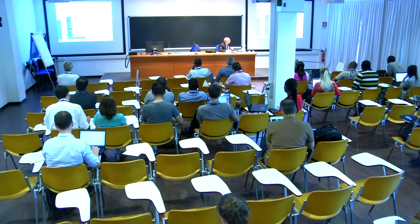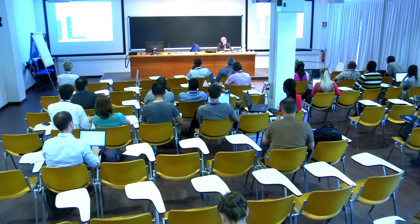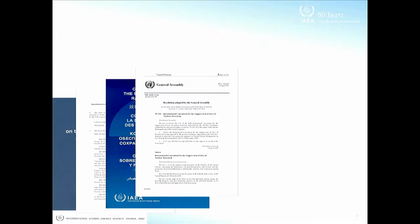An important factor that distinguishes nuclear security from nuclear safety, from the legal point of view, is that apart from instruments adopted under the auspices of the IAEA, there are a number of other instruments — treaties in particular, but also UN Security Council resolutions — that have been adopted outside the framework of the IAEA. So the IAEA is not the only entity under whose auspices instruments dealing with nuclear security have been adopted.